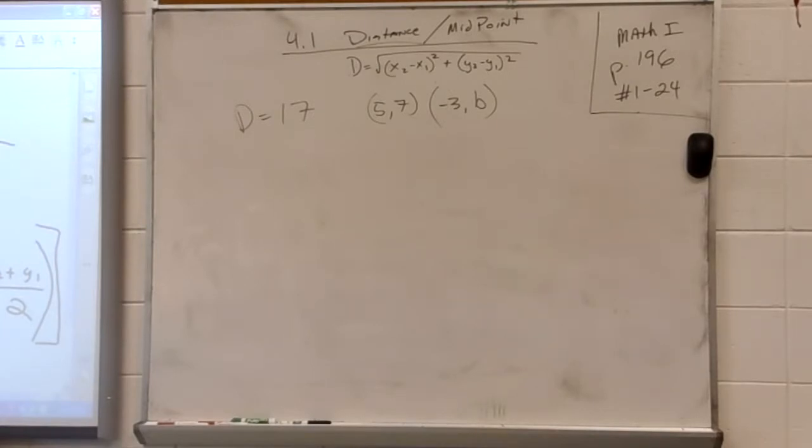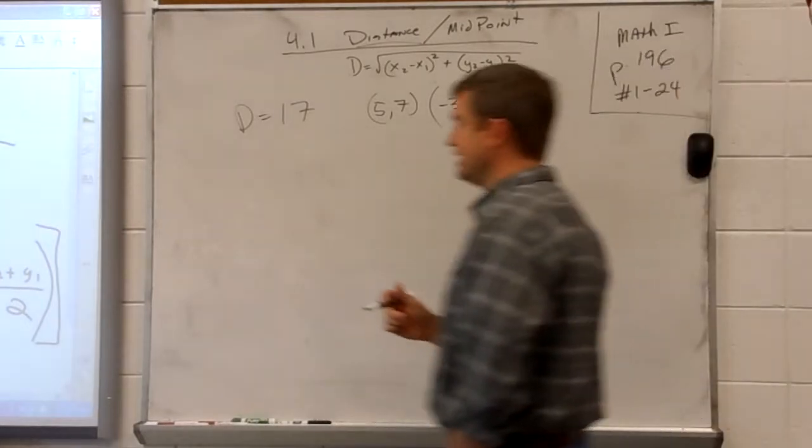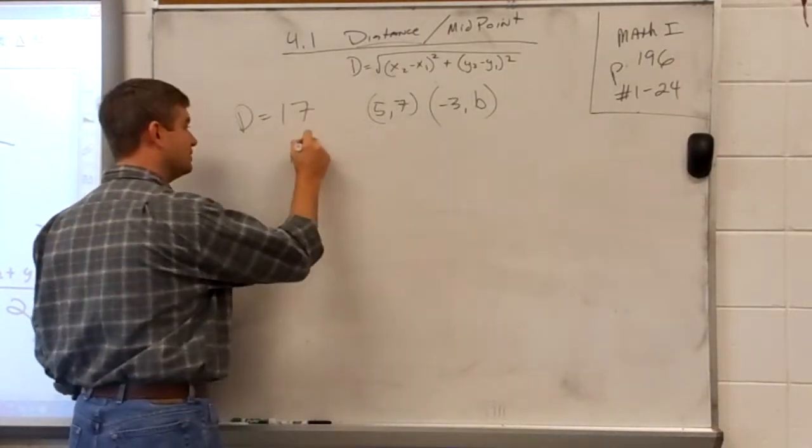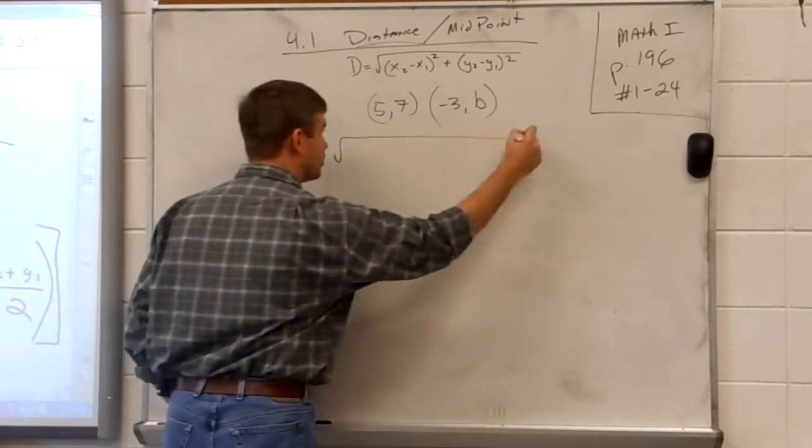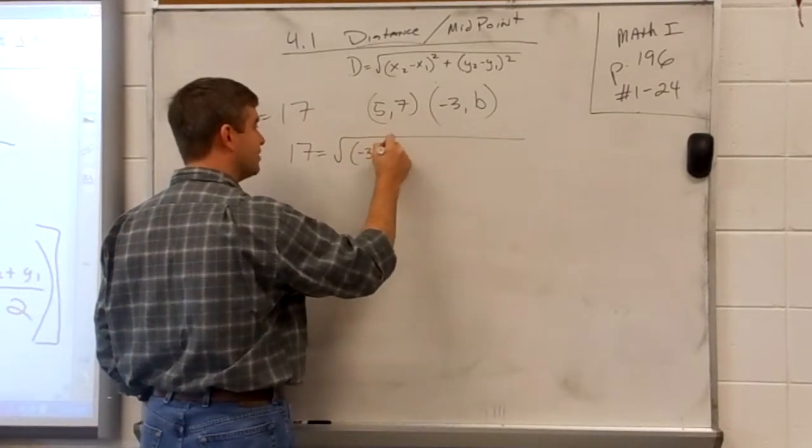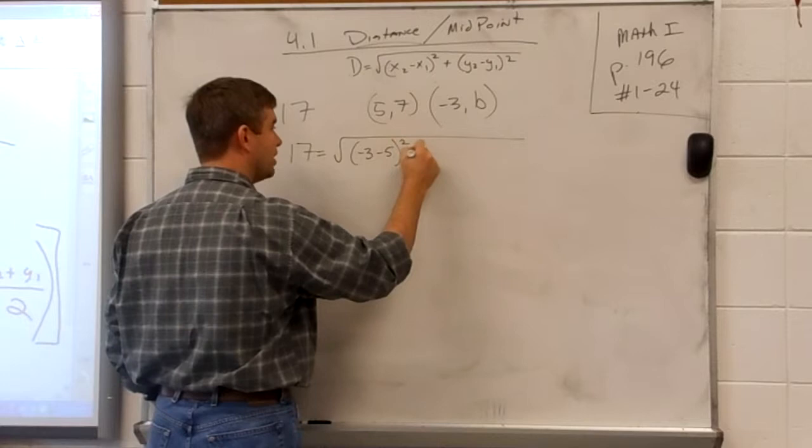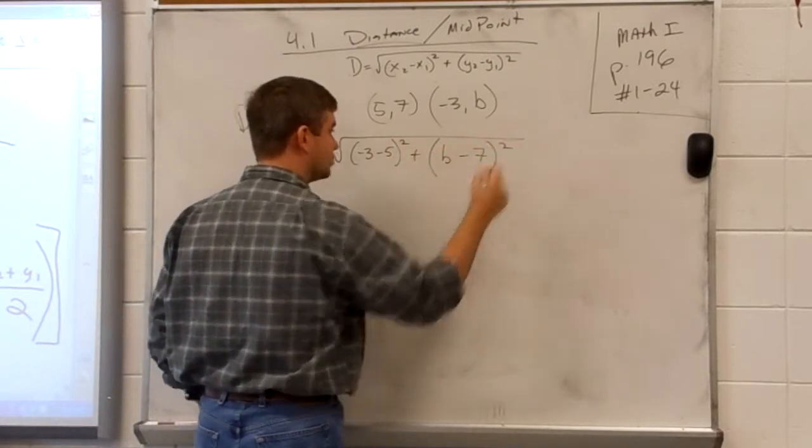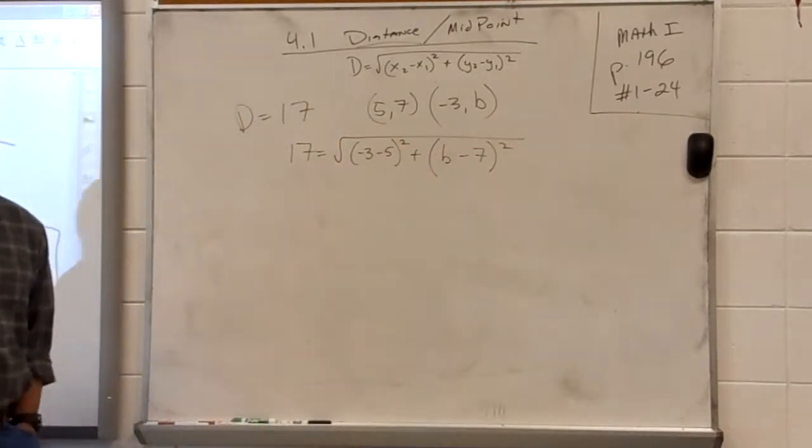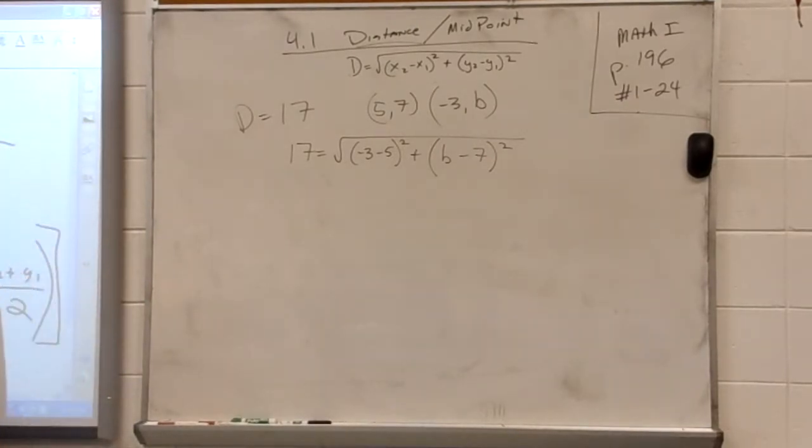All right, here we go. Let's work this problem out, see how many steps it takes us. First step is to plug everything in. On my paper, I would say 17 equals the square root of parenthesis negative 3 minus 5 parenthesis squared plus b minus 7 parenthesis squared. Just like that. All I did was plug it in, step number one.